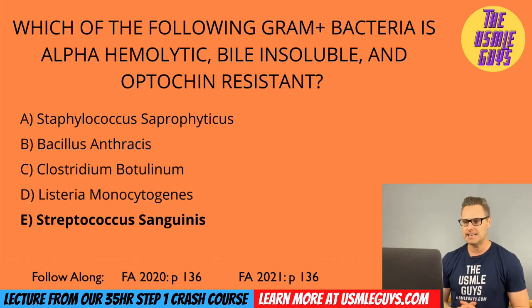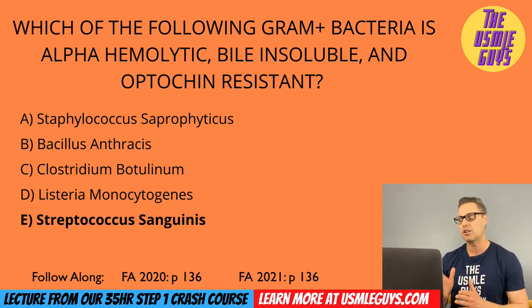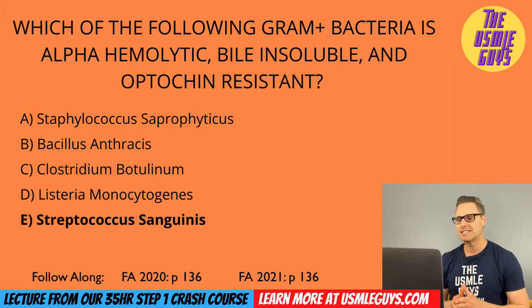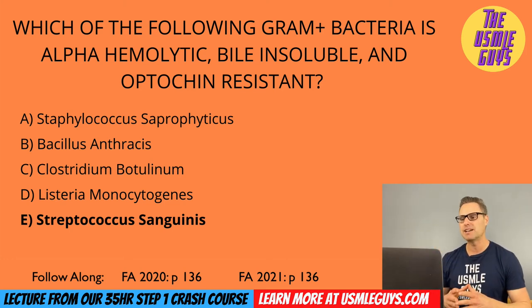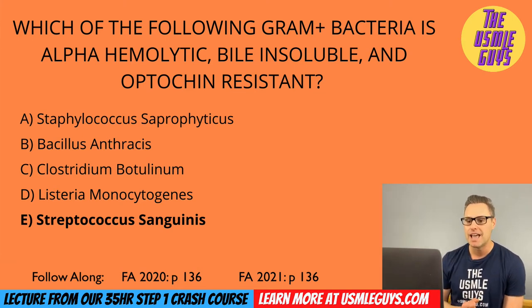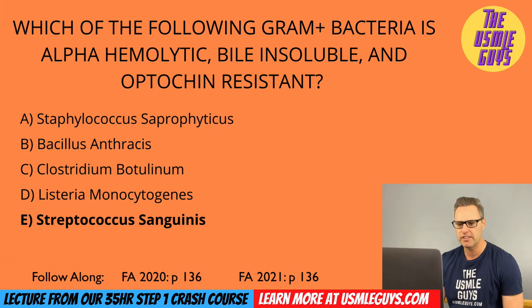The correct answer here is E — Strep sanguinis. This belongs to the viridans group streptococci, which also includes Strep mitis and Strep mutans. These are gram-positive, alpha hemolytic cocci that are optochin resistant and bile insoluble. They are normal flora of the oropharynx. Strep sanguinis can aggregate on damaged heart valves, leading to subacute bacterial endocarditis because they make dextrins that bind to fibrin and platelet aggregates on those valves. Strep mutans and mitis can both lead to dental caries.